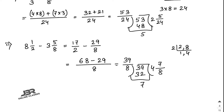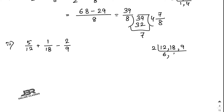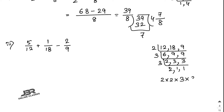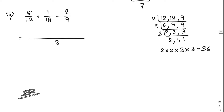Number 3: 5/12 plus 1/18 minus 2/9. Find the LCM of 12, 18, and 9. Dividing by 2 gives 6, 9, 9; dividing by 3 gives 2, 3, 3; then by 3 gives 2, 1, 1. So LCM equals 2 times 2 times 3 times 3, which is 36.